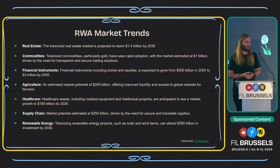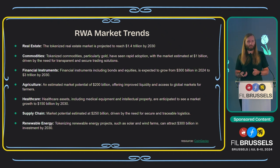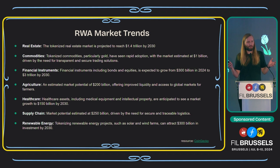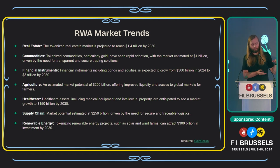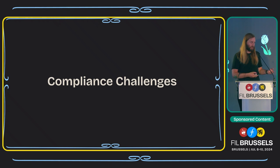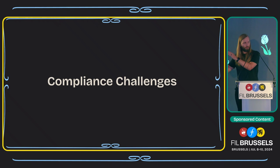Renewable energy is another area close to Hedera's heart — tokenizing renewable energy projects such as solar and wind farms, and tracking carbon credits so they can't be double-spent, can attract around $300 billion by 2030. I've said a lot of giant billion and trillion dollar numbers, all by 2030 — just six years away. There's an immense amount of trajectory and pressure for RWAs to hit a huge market cap, and we need to start thinking about how we develop the technology to meet those compliance needs.